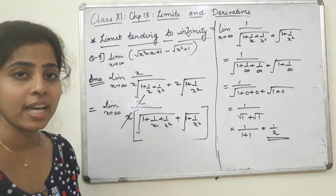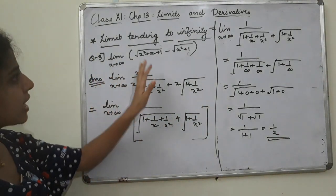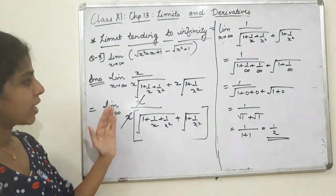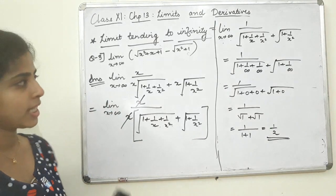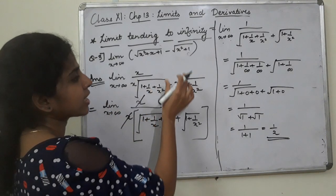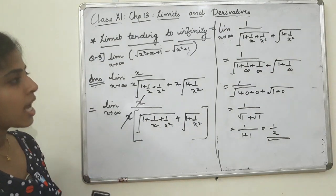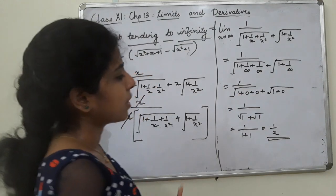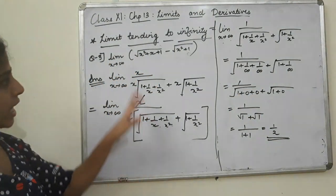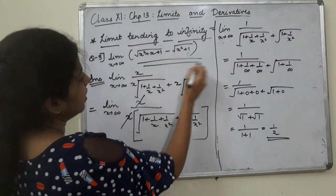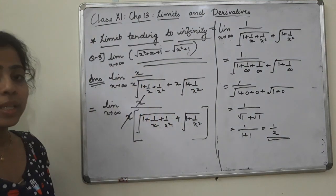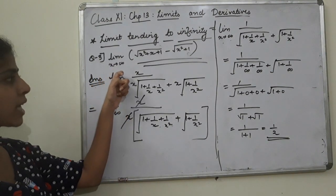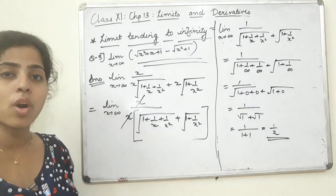The answer is 1 by 2. If the limit is tending to infinity, we take x common. Whatever is common, take it common, and you can find that 1 by infinity is zero. This question has a radical sign — we rationalize and solve. If infinity is common, take it common.